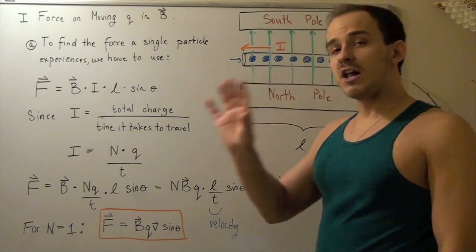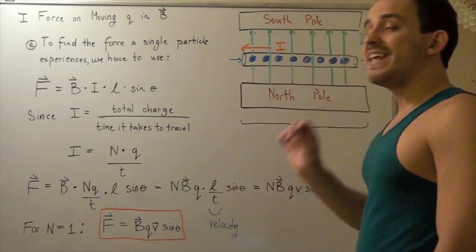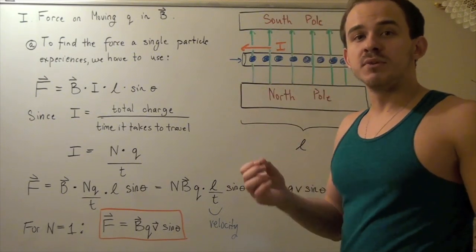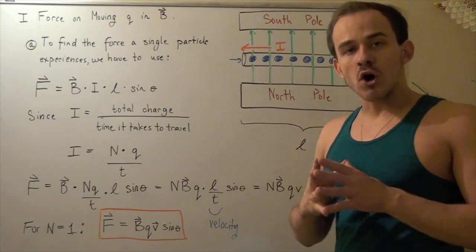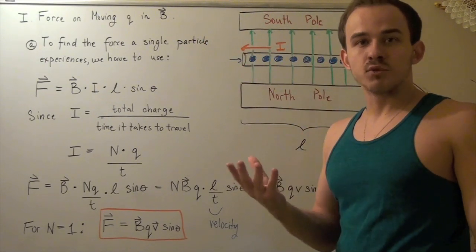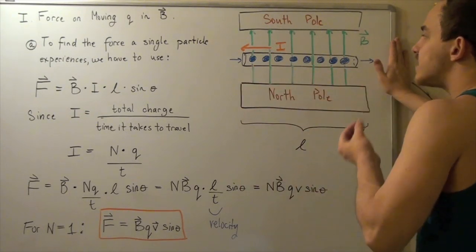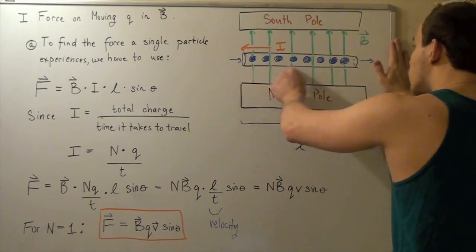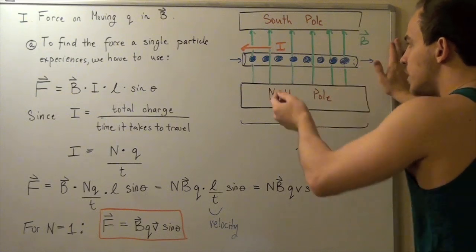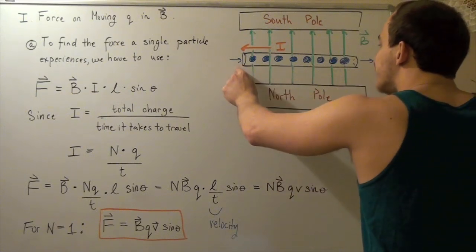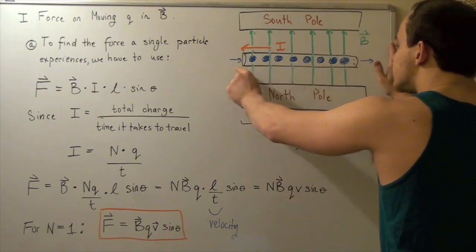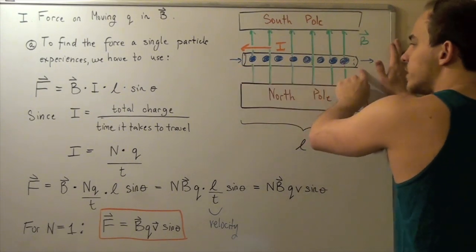Now, I want to ask the following question. What is current? Current is simply the total amount of charge that moves over some time. In this case, we have eight electrons, and that's our current. That's our total charge. And our current in this case is simply the time it takes these guys to travel from this point to this point.